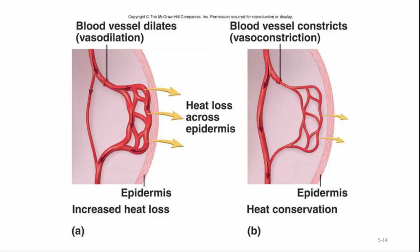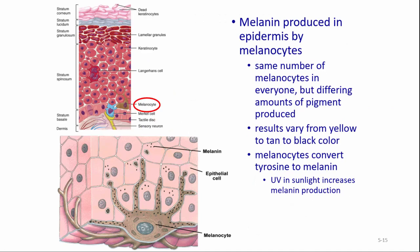Melanin is produced in the epidermis by melanocytes. We all have the same number of melanocytes; what differs is the amount of pigment produced and the color of that pigment, which varies from yellow to tan to black. Melanocytes convert the amino acid tyrosine to melanin, and ultraviolet light will increase melanin production. This melanocyte is putting melanin into the skin and pigmenting it.